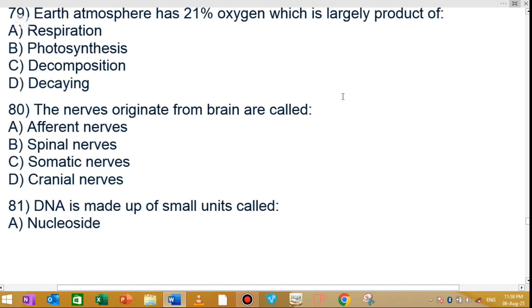MCQ number 79: Earth's atmosphere has 21 percent oxygen, which is largely a product of photosynthesis. The 21 percent oxygen present in the atmosphere is produced by photosynthesis. Option B is the correct answer.